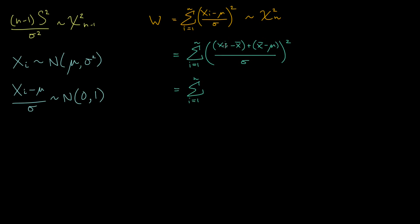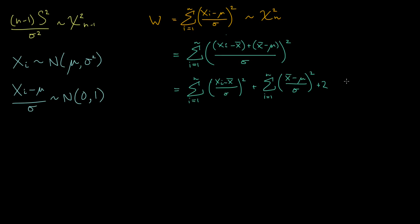We're going to expand these brackets to get a bit more information out — expand this squared term and carry across the summation notation. Because this is a squared term, we're going to get three terms. The first one is xi minus x-bar divided by sigma, all squared. The second term is the sum from i equals one to n of x-bar minus mu on sigma, all squared. Then we get a cross product: two times x-bar minus mu, times the sum from i equals one to n of xi minus x-bar.